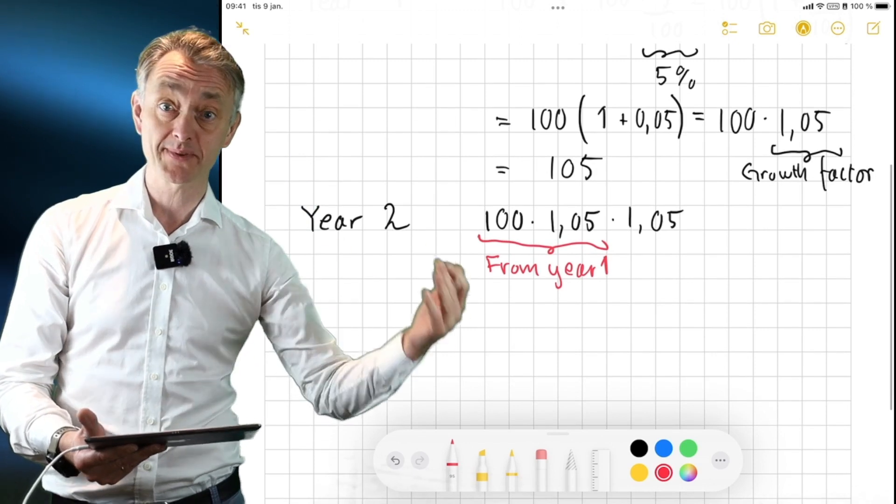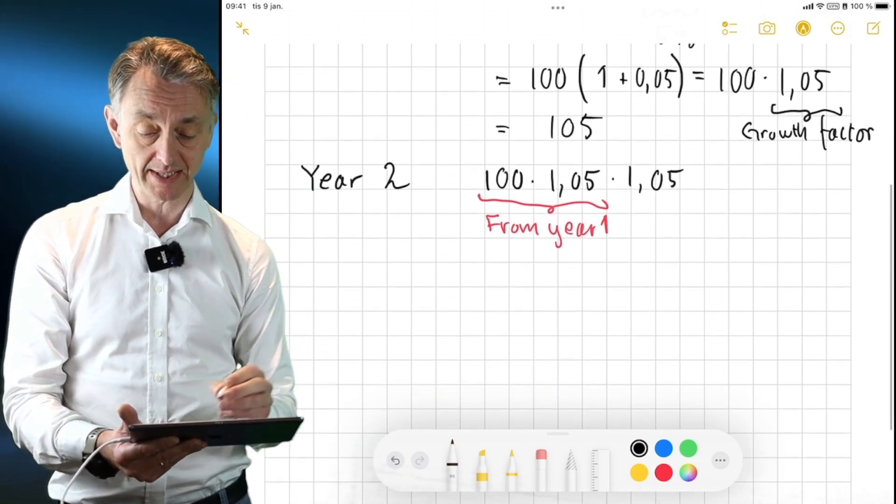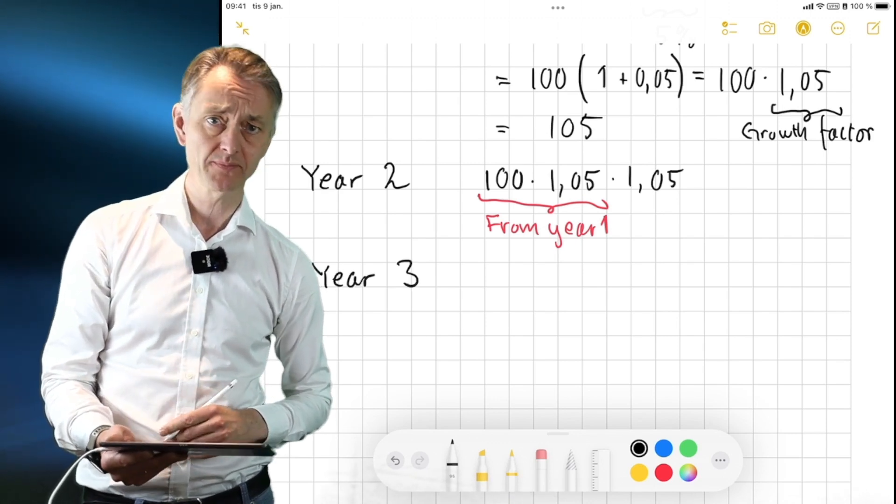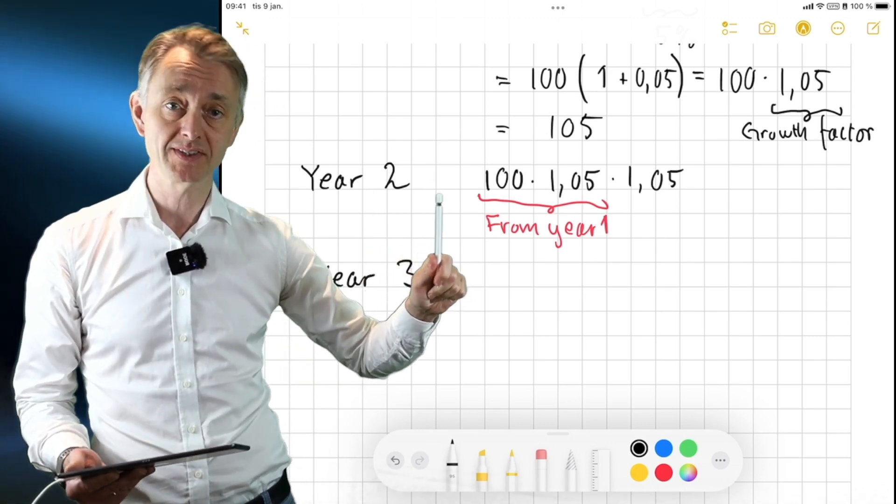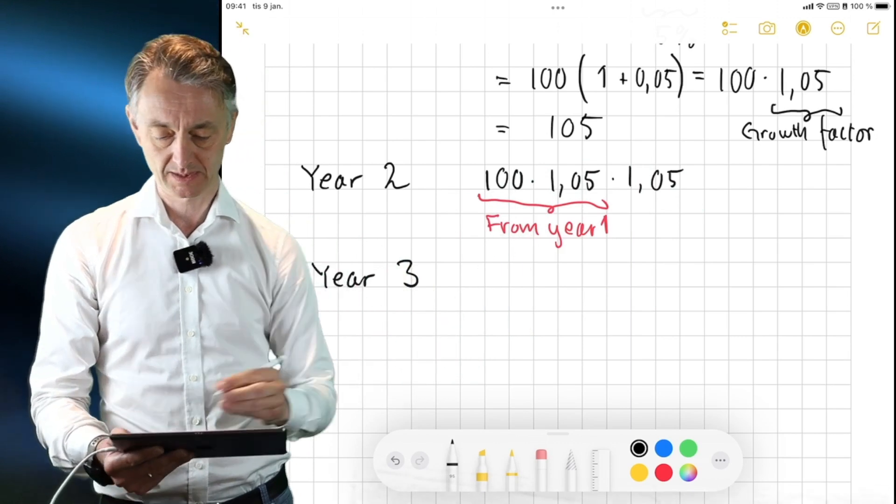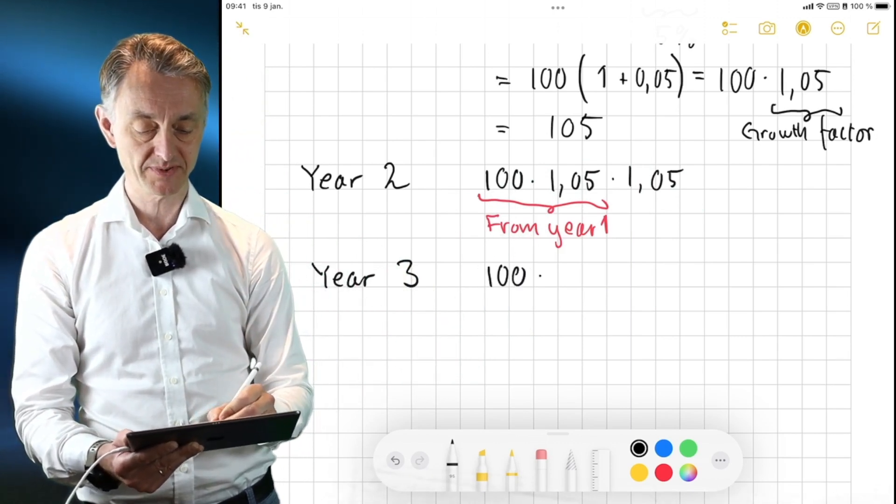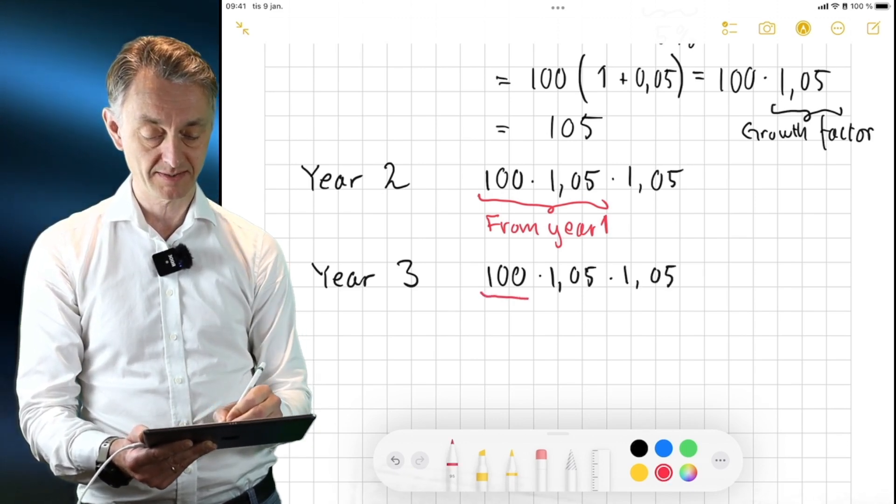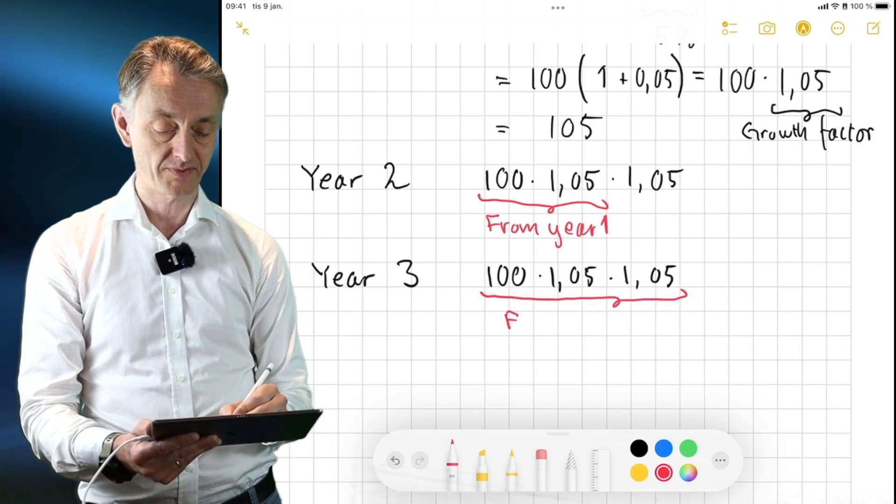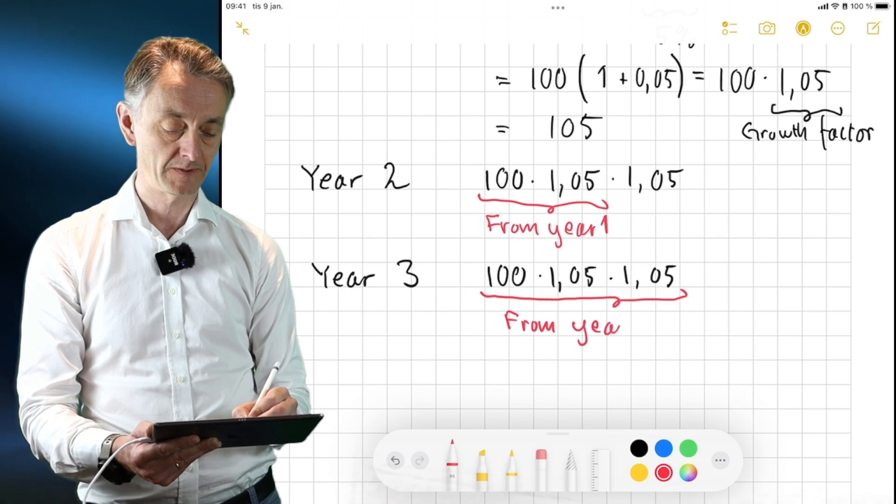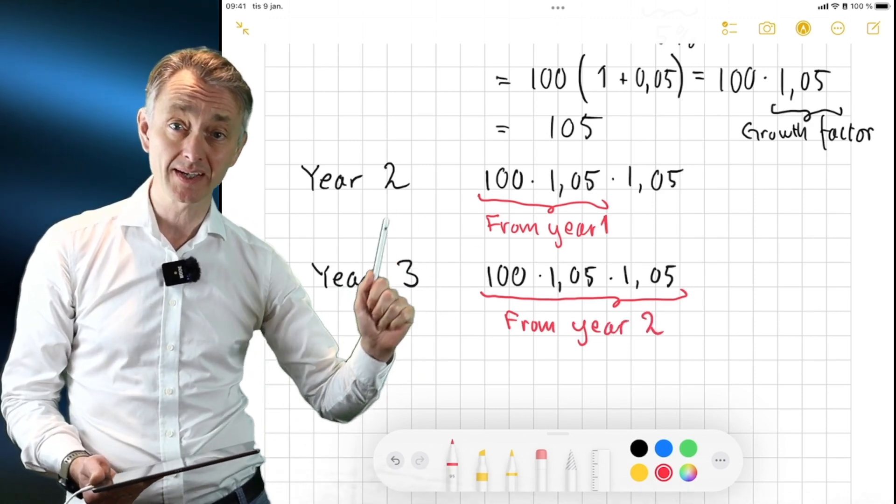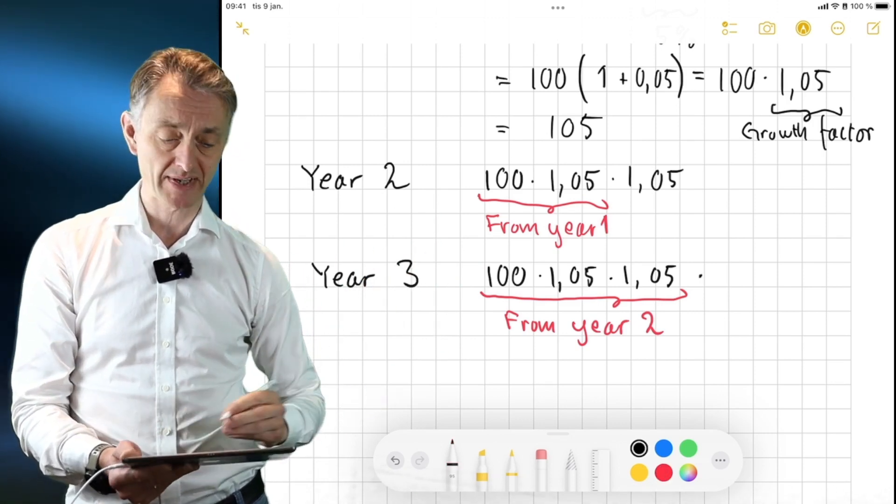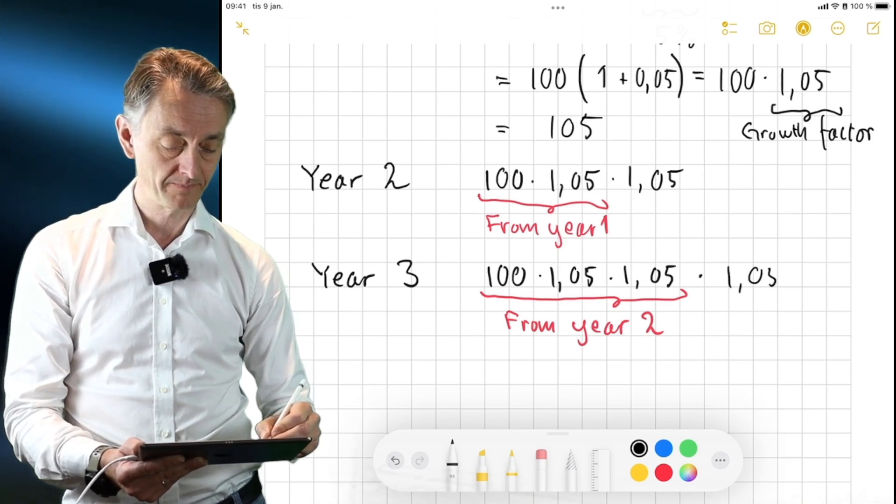Okay, let's now assume we keep the money here for yet another year. So now we end up in year three. So how much money will I then have? Well, I will have the money that I got in year two, right? And that is this sum here. So it is 100 times 1.05 times 1.05. This is from year two. But then of course, the money has been growing at a 5% rate during year three. So we have to multiply this by the growth factor again.